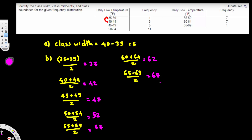Now let's do the next part, which is asking for the class boundaries. To find the class boundaries, you subtract 0.5 from the lowest limit and add 0.5 to the highest limit. So for the first one, 35 minus 0.5 gives 34.5. The next boundary is 40 minus 0.5, which is 39.5. We don't have to add 0.5 to 39 because we already get that value by subtracting from the next class. So we can just subtract 0.5 until the end, but for the final value, 69, we have to add 0.5 since there is no next class.